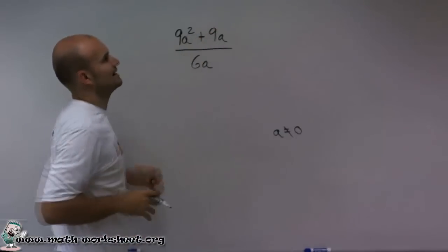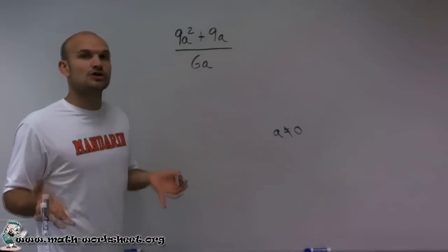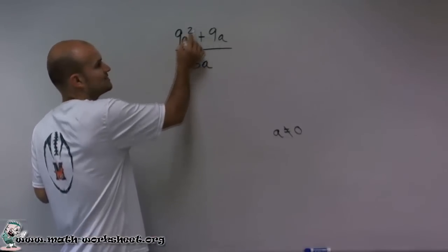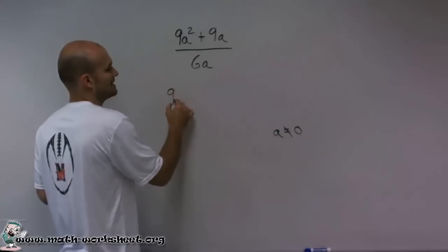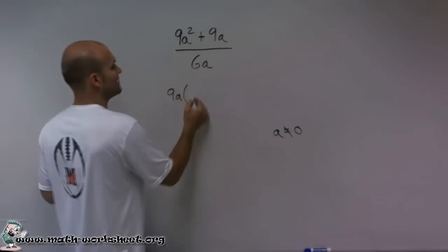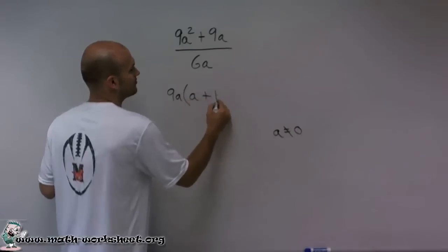So on the numerator, I need to take a look at this and say, what terms do these have in common? The 9a squared and the 9a both have a 9a in common. So when I factor them out, what I'm left with is an a plus 1,